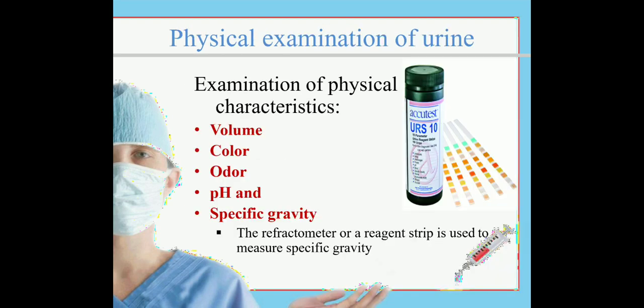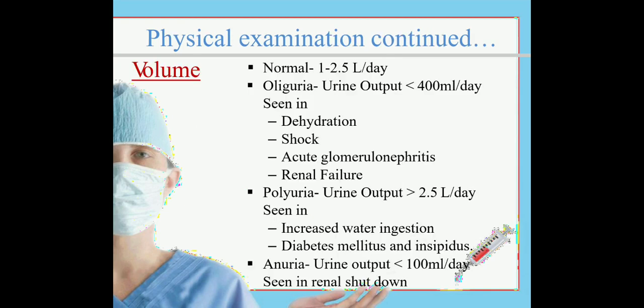In community health nursing, what we basically do is physical examination of urine and chemical examination of urine. In physical examination, urine is characterized by volume, color, odor, pH, and specific gravity. Volume we can measure, color we can observe, odor we can smell, and pH value and specific gravity we can measure by pH strips, reagent strips, or refractometer.